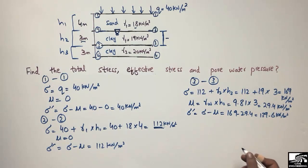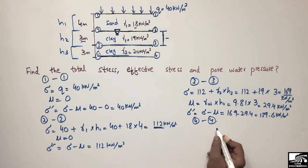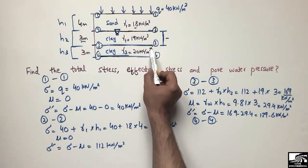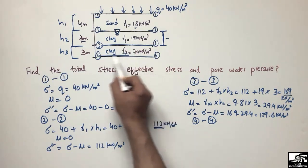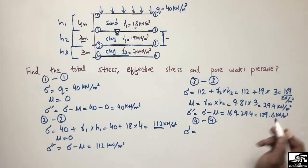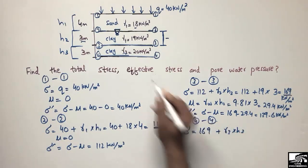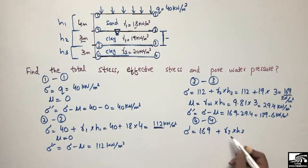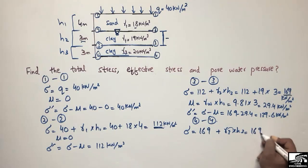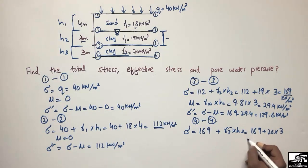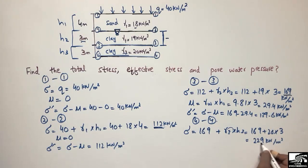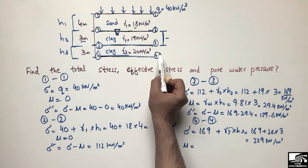Now to calculate stresses at point 4-4. The total stress at 4-4 equals the stress at 3-3 plus gamma 3 × h3. Total stress = 169 + 20 × 3 = 229 kN/m². This is the total stress acting at point 4-4.